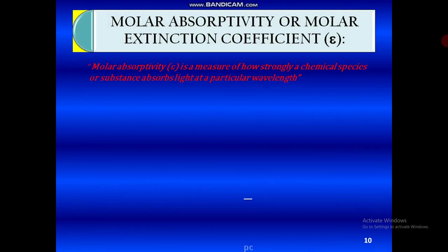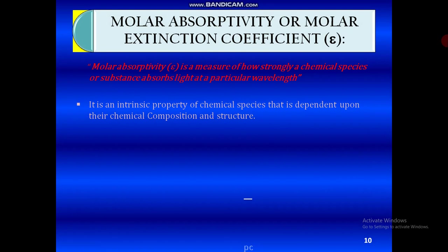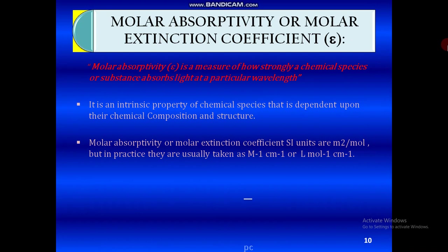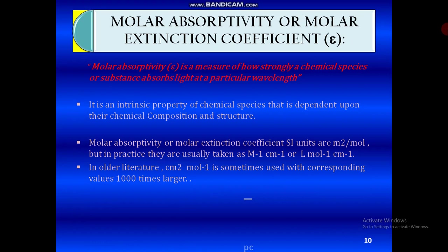Molar absorptivity or molar extinction coefficient is defined as a measure of how strongly a chemical species or substance absorbs light at a particular wavelength. It is an intrinsic property of a chemical species, depending upon its chemical composition and structure. Its units are m² per mole, but in practice they are usually expressed as mol⁻¹ cm⁻¹ or L mol⁻¹ cm⁻¹. Molar absorptivity is denoted as epsilon (ε), which equals absorbance divided by B times C.